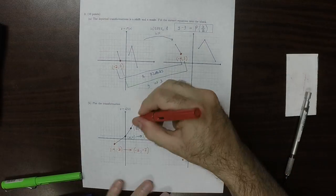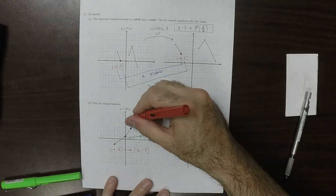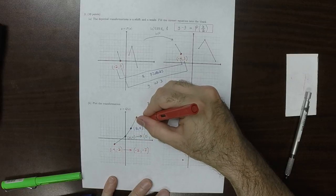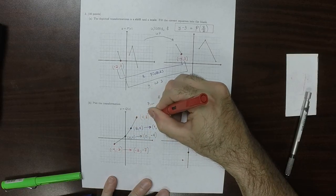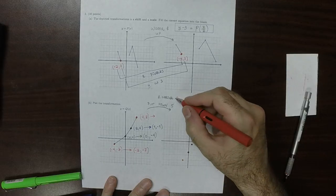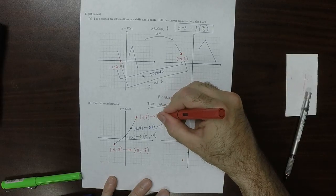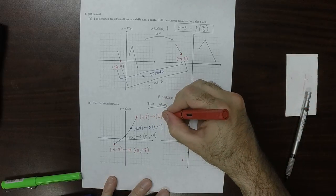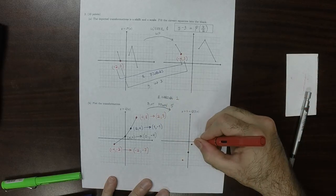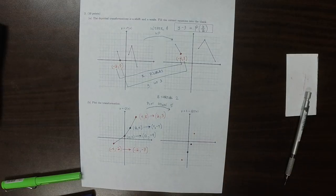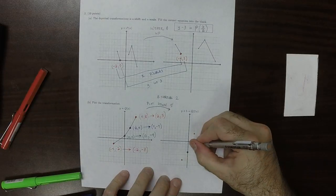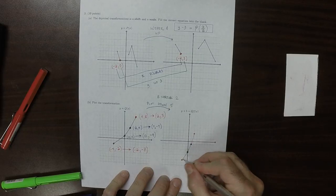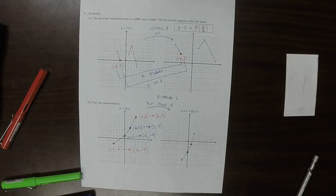And then finally, this is (4, 8). So it's going to go to, so horizontal shrink of 2, so the first coordinate is divided by 2. And the second coordinate, we subtract 5. So (2, 3). And then connect those dots. And that's the answer.